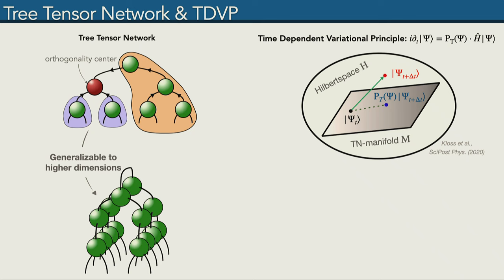To do time evolution, we employ the time-dependent variational principle, where the idea is that our wave function lives on this tensor network manifold, which is embedded in the full Hilbert space. After doing one infinitesimal time step, where we basically solve the Schrödinger equation, this time step can potentially lead us out of our manifold, so we always need to project back onto it using this projector P. This projector P can be split up in different ways. The math for Tree Tensor Network has been done in this paper here.